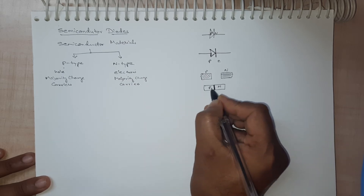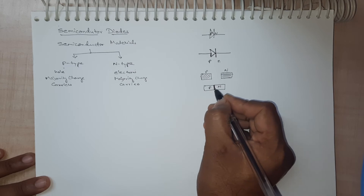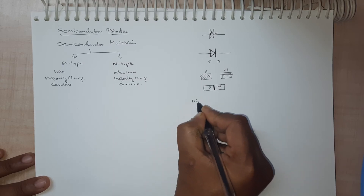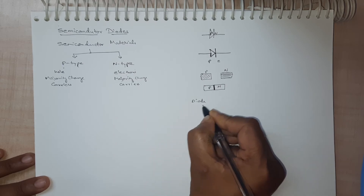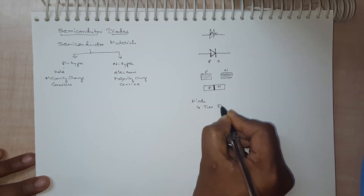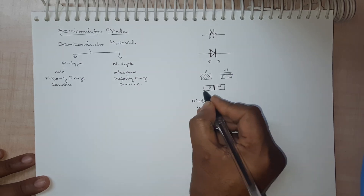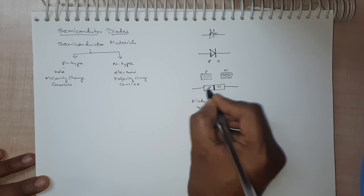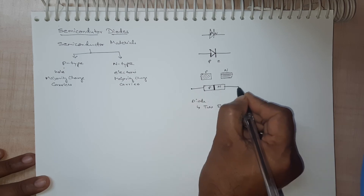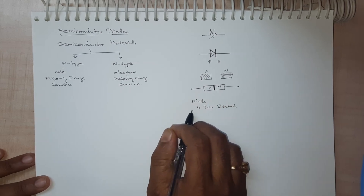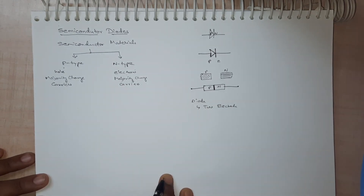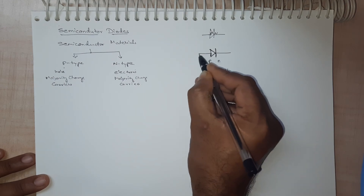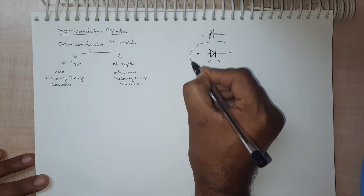This PN junction forms a diode. The word 'diode' means two electrodes — two electrical terminals. We have a P-side terminal and an N-side terminal, hence this is called a PN junction diode. Its symbol is represented using a triangle and a vertical line, and these are its terminals.